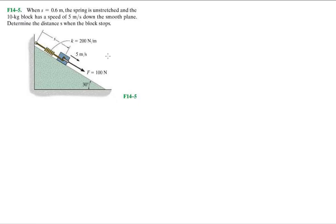There's a pretty good one. When S equals 0.6, the spring is unstretched and the 10 kilogram block has a speed of 5 meters per second down the smooth plane. Determine the distance S when the block stops.